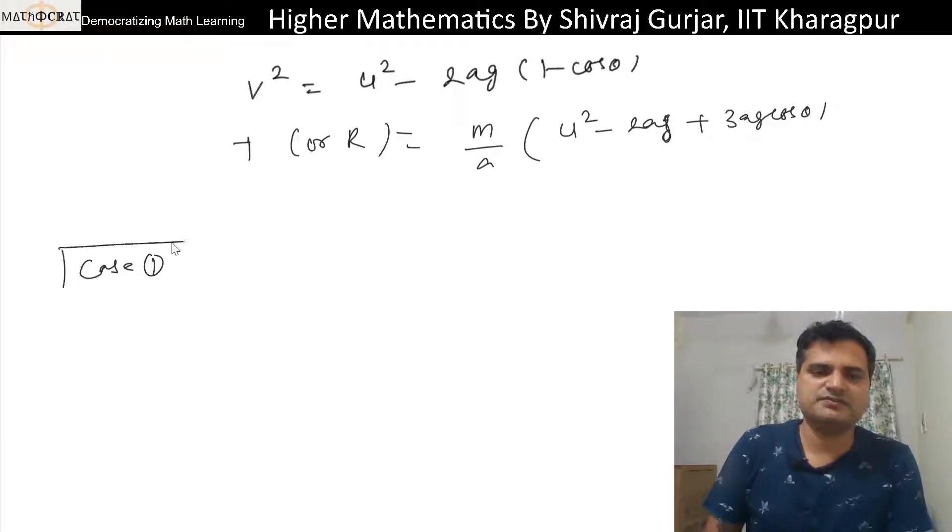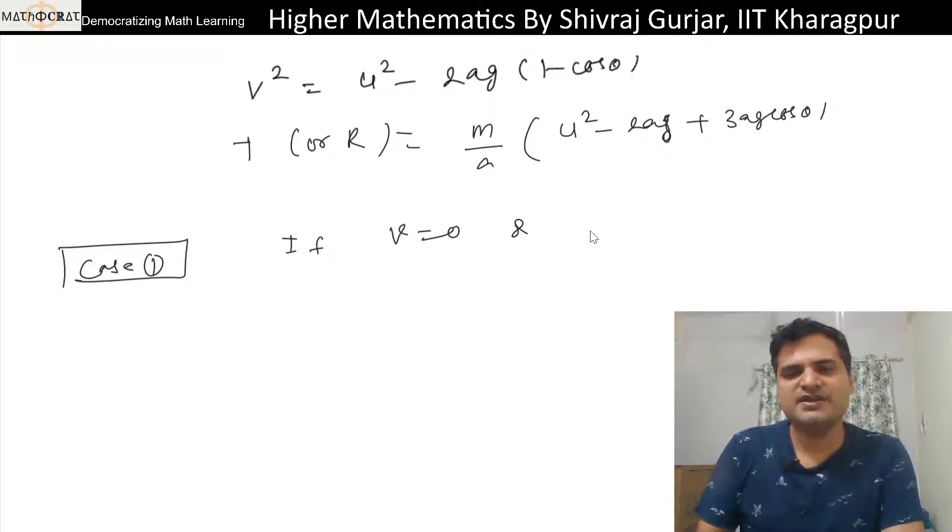Now, case 1: if velocity is 0 and tension is not 0, first case can be this.